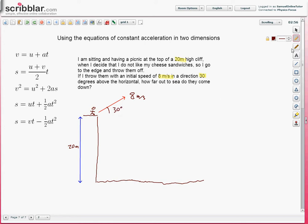30 degrees above the horizontal. First thing you need to do with this is change this velocity, this initial velocity, into a vertical and a horizontal component. So, we're going to do that now, straight away.